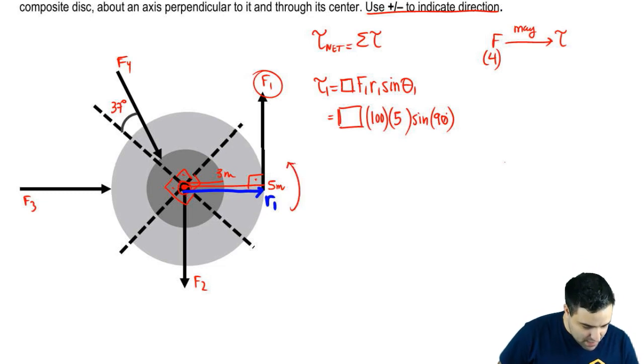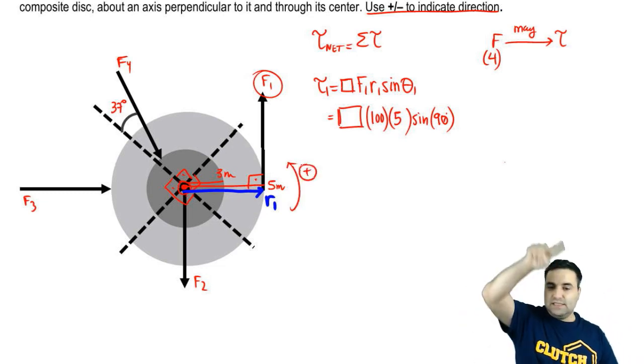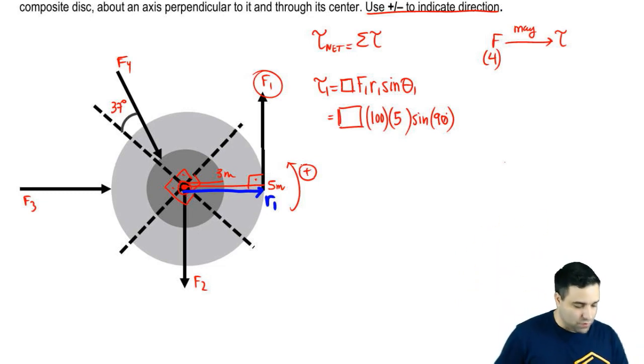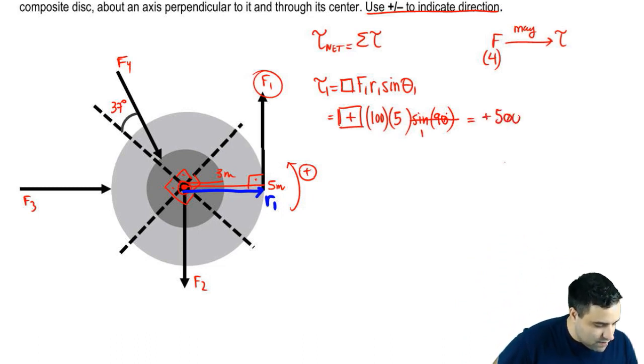So this is going to be a positive torque, because it's causing the disc to spin in a counterclockwise in the direction of the unit circle. So it's positive. This is one, and you just end up with positive 500 of torque, 500 newton meter. All right.